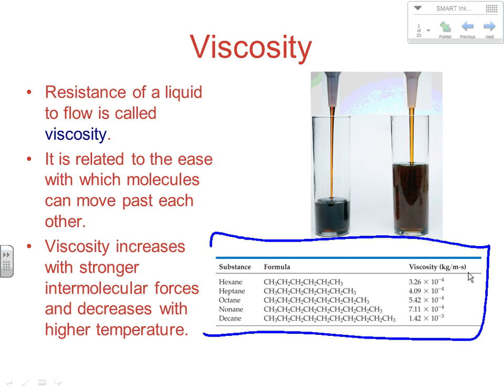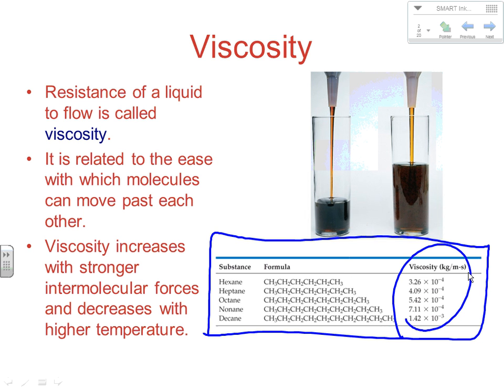We have a table of different hydrocarbons — hexane, heptane, octane, nonane, and decane — where each step adds a carbon, increasing the size of the molecule. Remember LIMPAC: larger, more polarizable electron clouds make stronger intermolecular forces. So going from hexane to decane increases the boiling point and also increases viscosity due to stronger London forces.